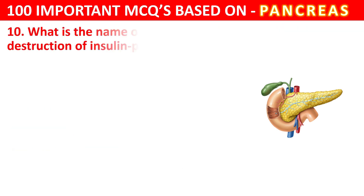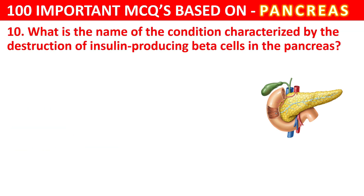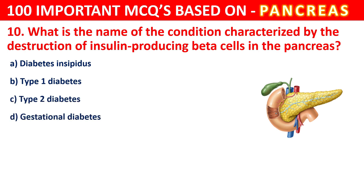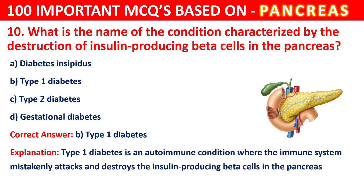Question 10. What is the name of the condition characterized by the destruction of insulin-producing beta cells in the pancreas? Your options are Diabetes Insipidus, Type 1 Diabetes, Type 2 Diabetes, or Gestational Diabetes. The correct answer is B, that is Type 1 Diabetes. Type 1 Diabetes is an autoimmune condition where the immune system mistakenly attacks and destroys the insulin-producing beta cells in the pancreas.